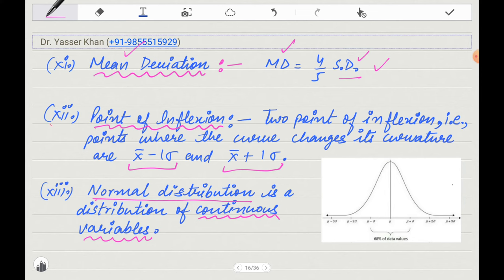Next, point of inflection. What is the point of inflection? The point of inflection is where the curve changes its curvature. What is mean minus 1 standard deviation and mean plus 1 standard deviation? Basically, the mean plus minus 1 standard deviation, so the mean minus a standard deviation and mean plus standard deviation, the curve changes its direction. So that's why it becomes a point of inflection.